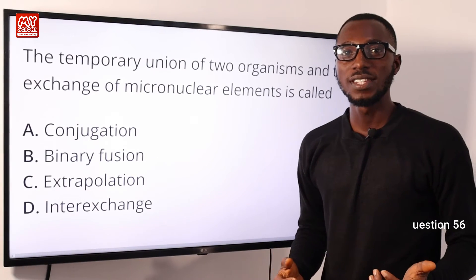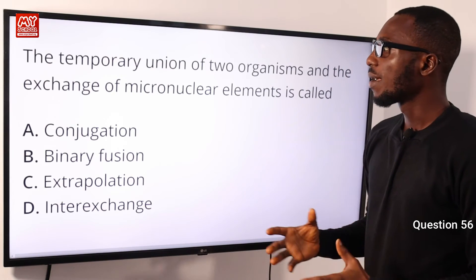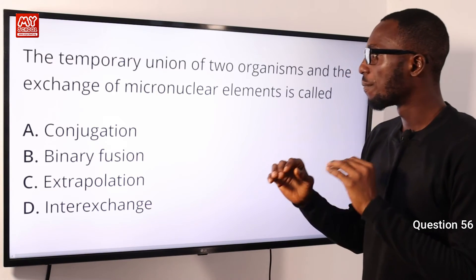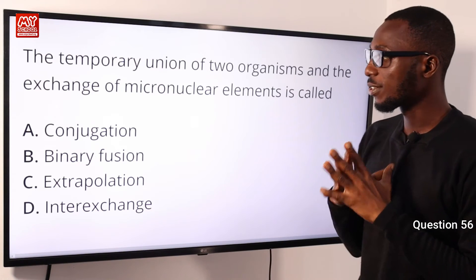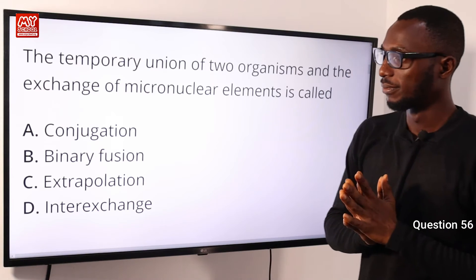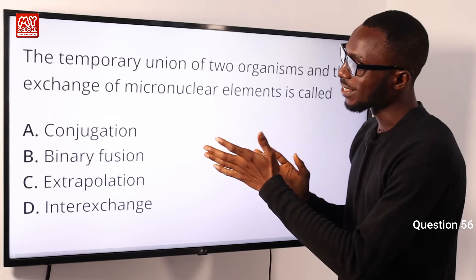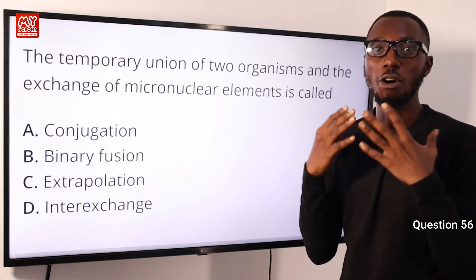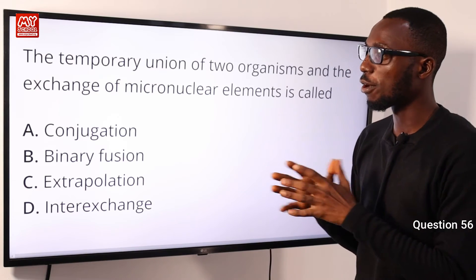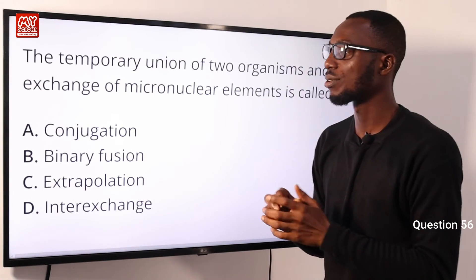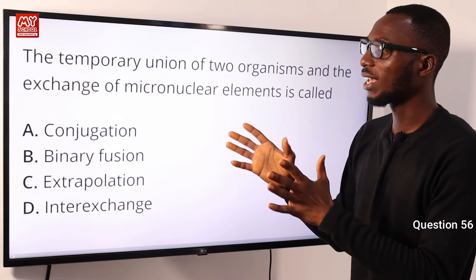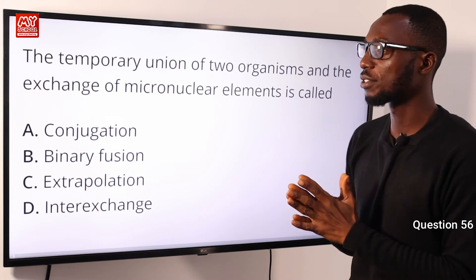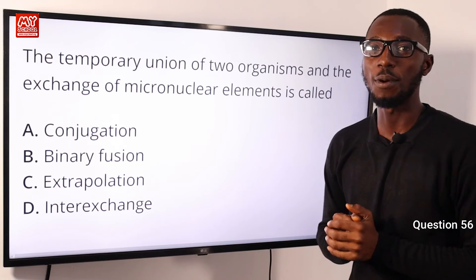Question 56: The temporary union of two organisms and the exchange of micronuclear elements is called what? This is a very accurate definition of conjugation. So we will take option A as the most viable option to this question. The correct option is A.